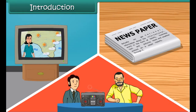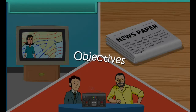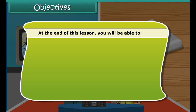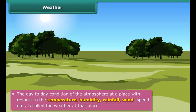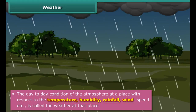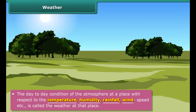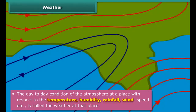Objectives: at the end of this lesson you will be able to define weather and climate, and understand a weather report. You might have come across the situation where a sunny morning suddenly changes to a cloudy day and it starts raining heavily, or heavy rain vanishes within a few minutes and gives way to bright sunshine.